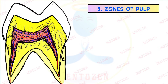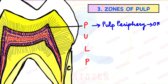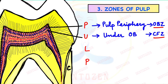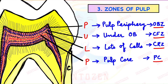How can you remember these zones using the word PULP? P is the periphery, made up of odontoblasts — odontoblastic zone. U is under the odontoblasts, where nothing is there — cell-free zone. L is made up of lots of cells — cell-rich zone. P is the pulp core, the center of the pulp. That is how you can remember these four zones in order from outside to inside.